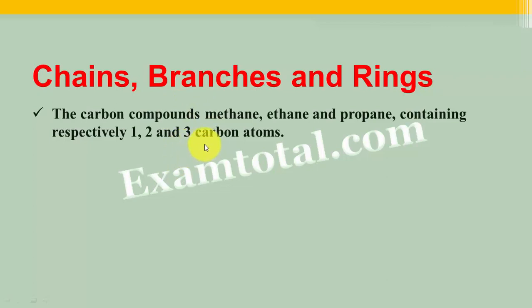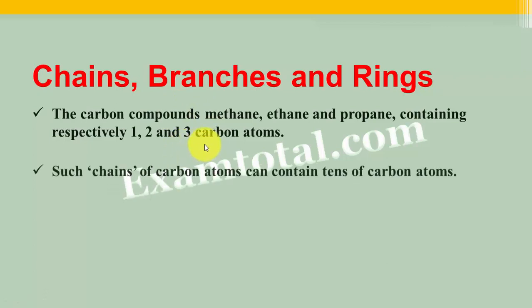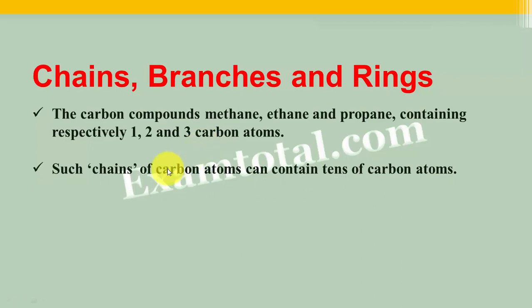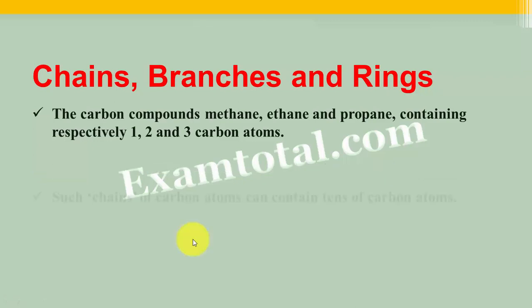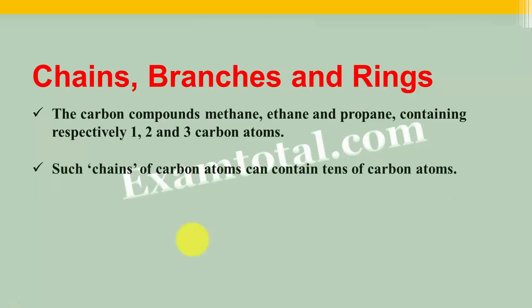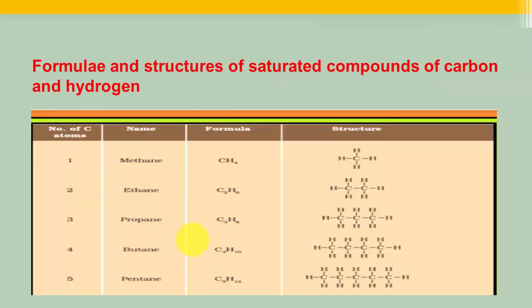The carbon-carbon chain can contain up to 10 or even more carbon atoms — these chains can contain tens of carbon atoms. So after 1, 2, 3 carbons, chains of up to 10 carbon atoms can be made. We can see some formulas and structures of saturated compounds of carbon and hydrogen. We already know what saturated means — S for saturated, S for single bond.